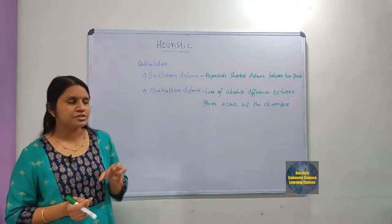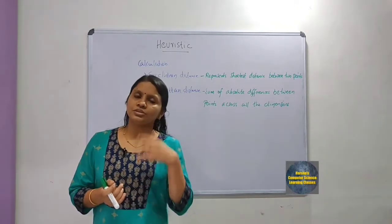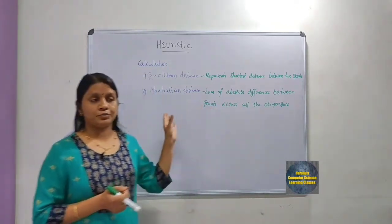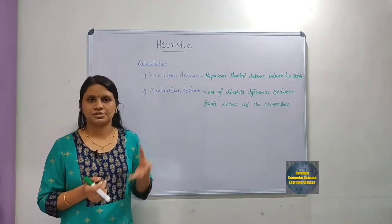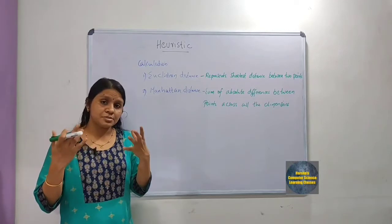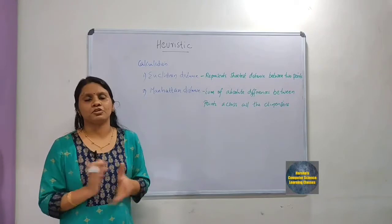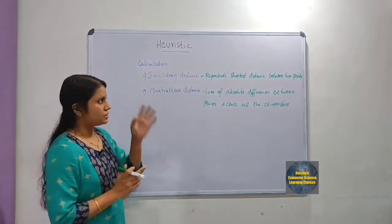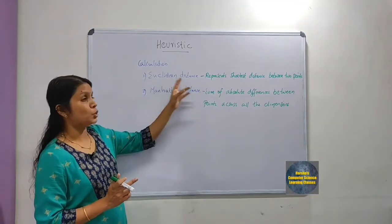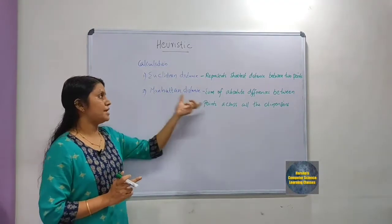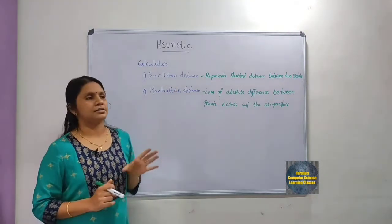The calculation of heuristic involves distance metrics, also called distance measures. Distance measures play a very important role in machine learning. There are two distances used for calculating heuristics: Euclidean distance and Manhattan distance.